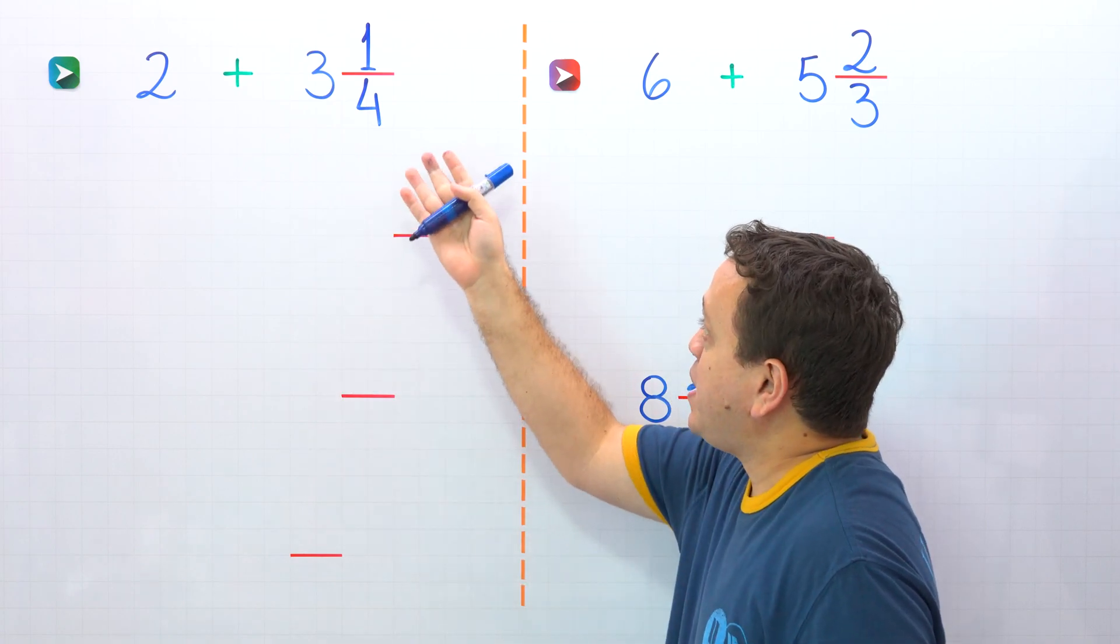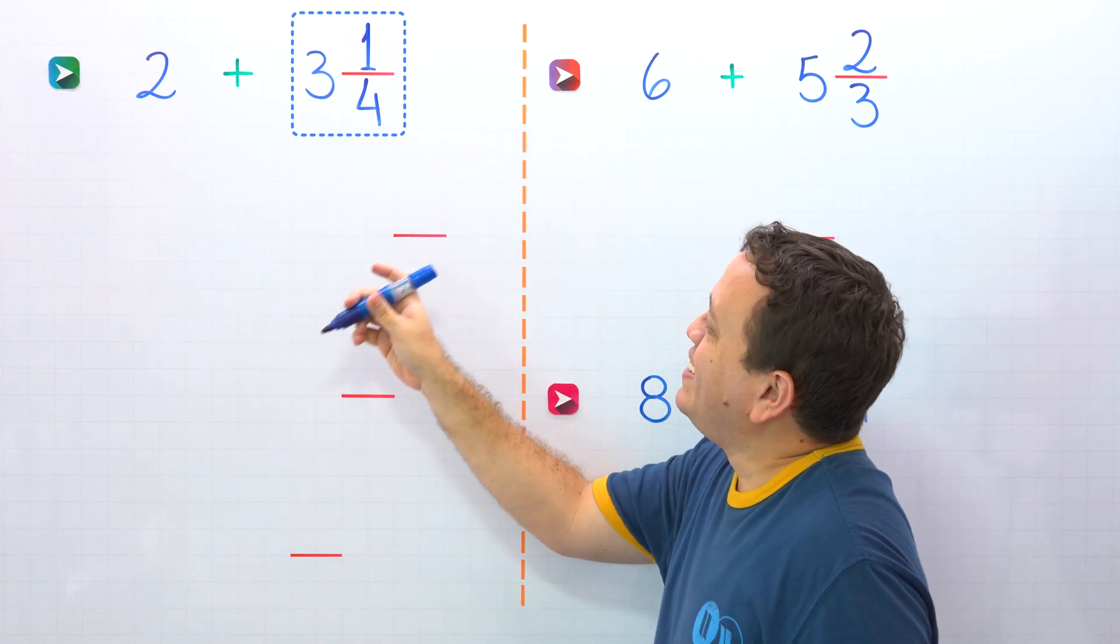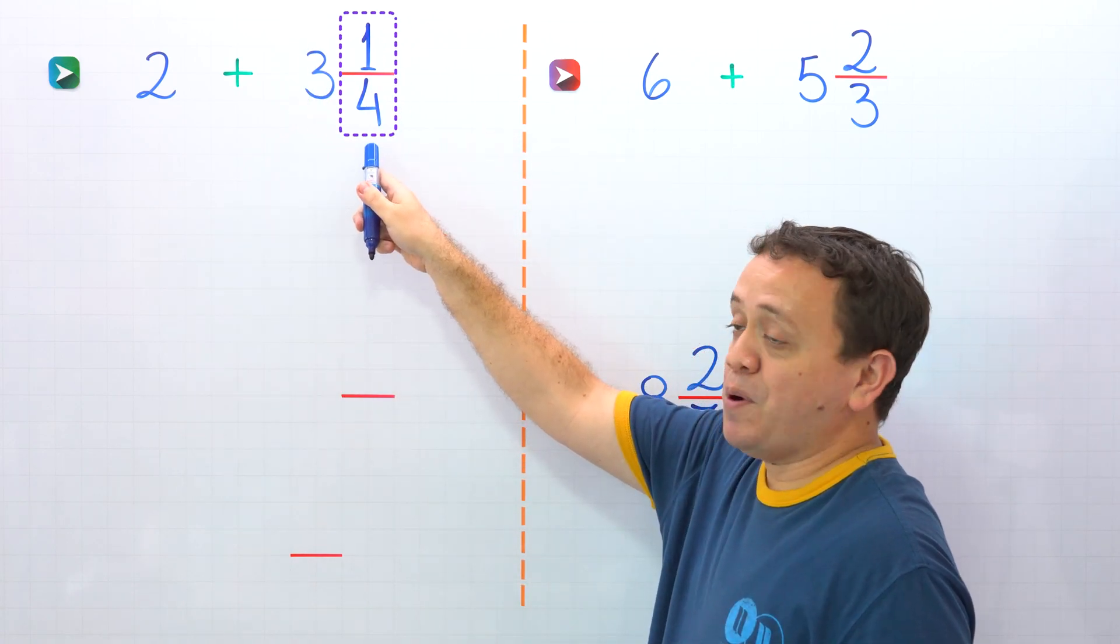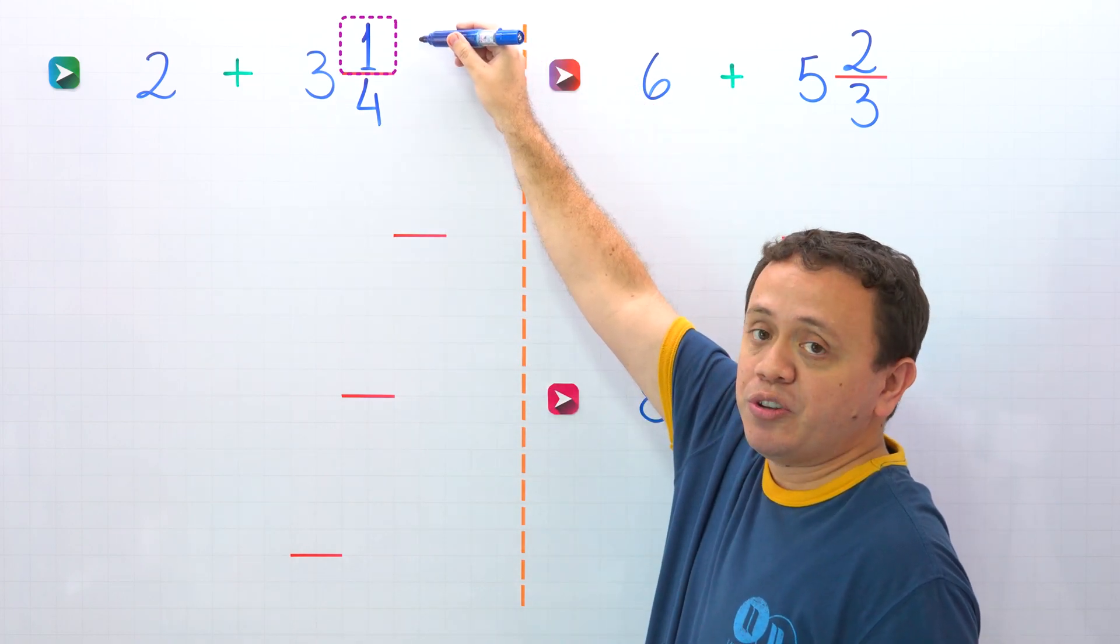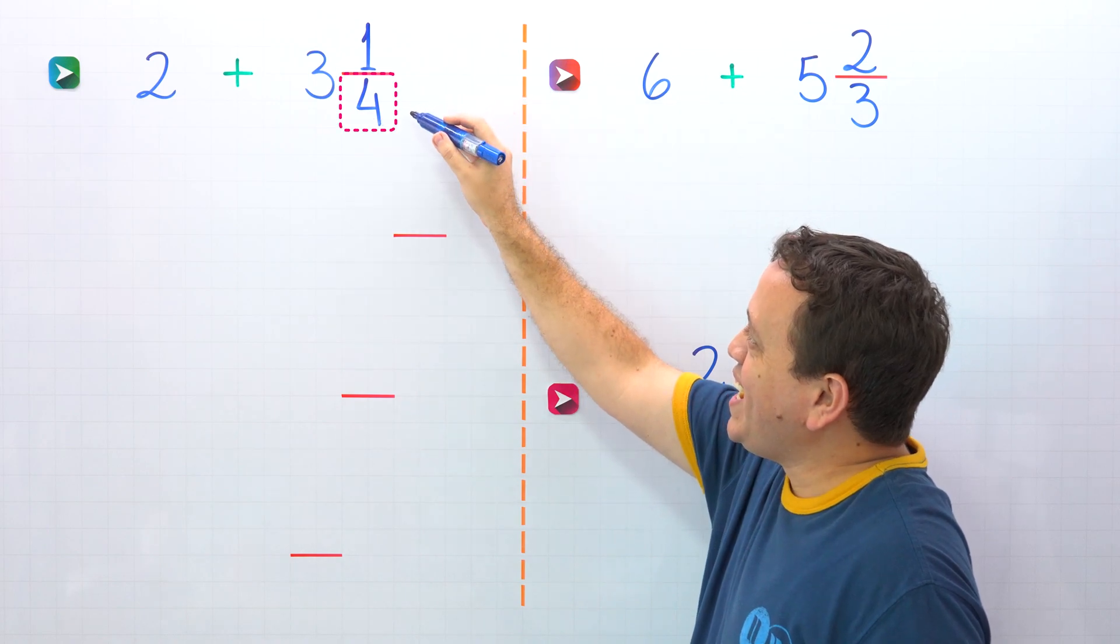Before getting into it, we need to remember that a mixed number, like this one, is the sum of a whole number and a proper fraction. Also, a proper fraction is a fraction where the numerator, the top number, is less than the denominator, the bottom number.